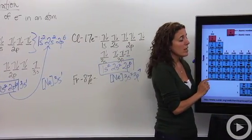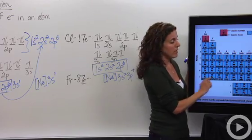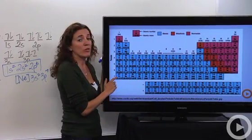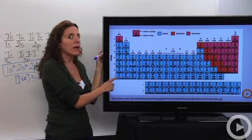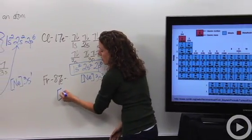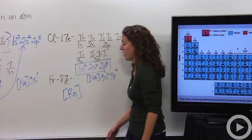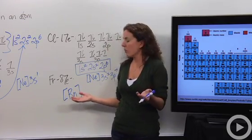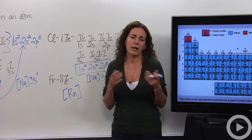The noble gas before francium is radon. Radon has 86 electrons. Francium only has one more. So we're going to say, okay, let's make it easy on ourselves. Let's say it has one more electron. Awesome. So I just have to notice where is the electron coming from and how am I going to denote that?